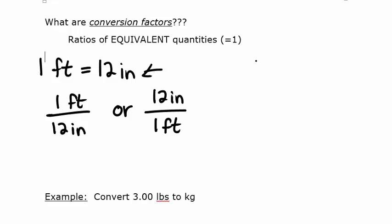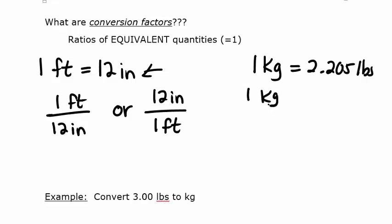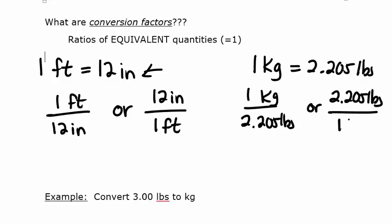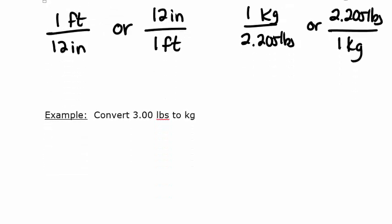Another example: one kilogram is equal to 2.205 pounds. We can make two conversion factors — one kilogram per 2.205 pounds, or 2.205 pounds per kilogram. Now let's use conversion factors to solve a problem.